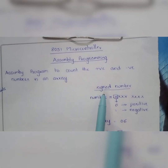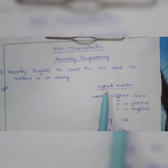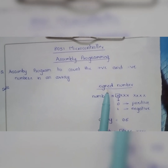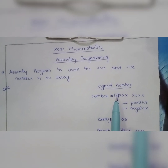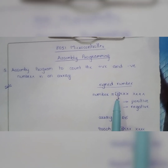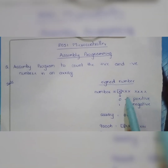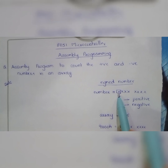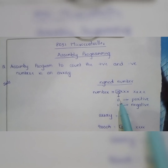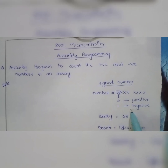In a signed hexadecimal number, how the sign of a number is identified? It will be identified based on the value present in the most significant bit. The hexadecimal number is represented by 8 bits. If the most significant bit is 0, the number is positive. If the most significant bit is 1, the number is negative.